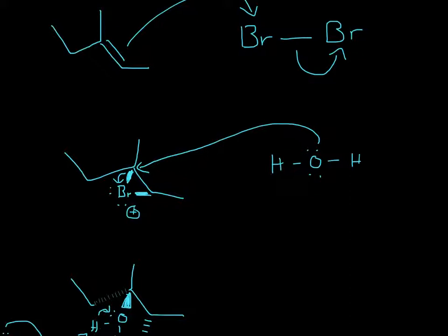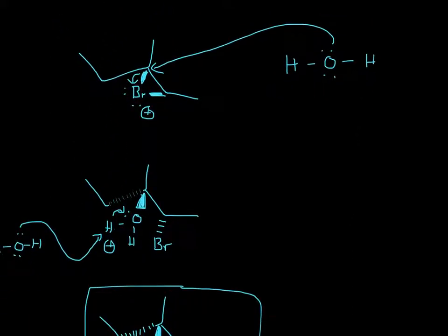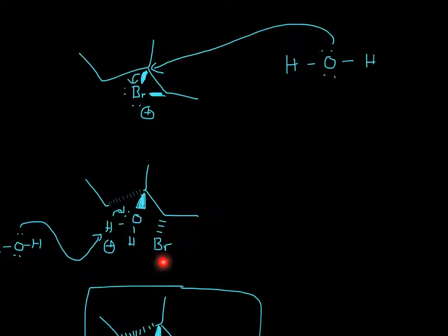So the water will just go there because the carbocation is more stable there. The electrons from this bond attached to the bromine will go to the bromine, and then now you'll be left with water hanging off right here. Since it attacks from above — you can do it either way — but since it attacks from above, it will push the entire structure downward. So that's why bromine is down like this, and then oxygen is a wedge, so it's pointing out.